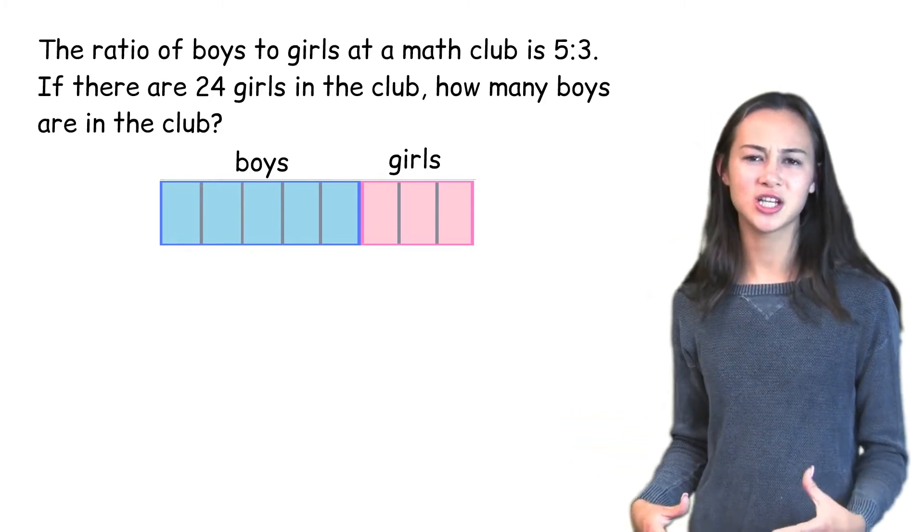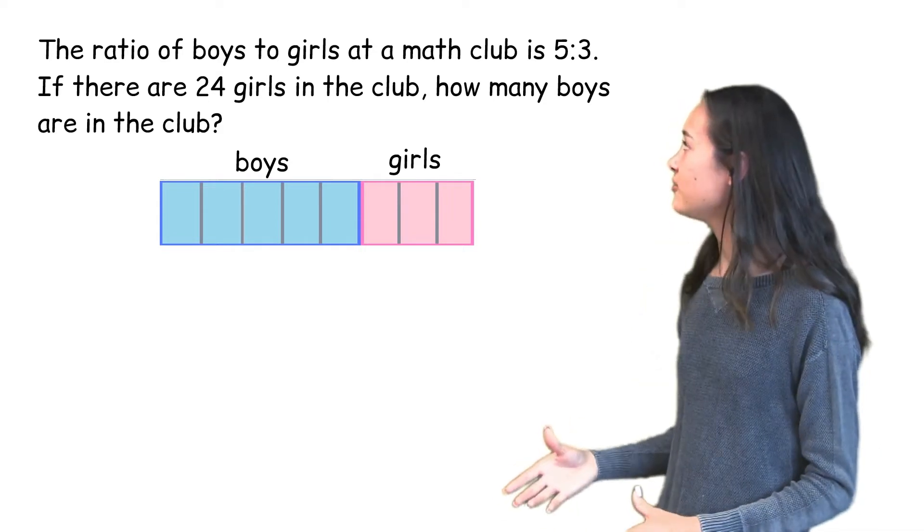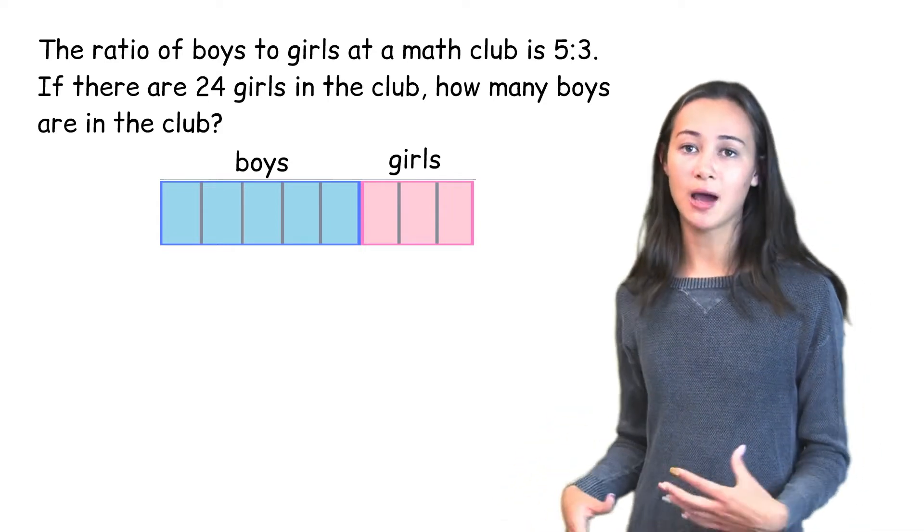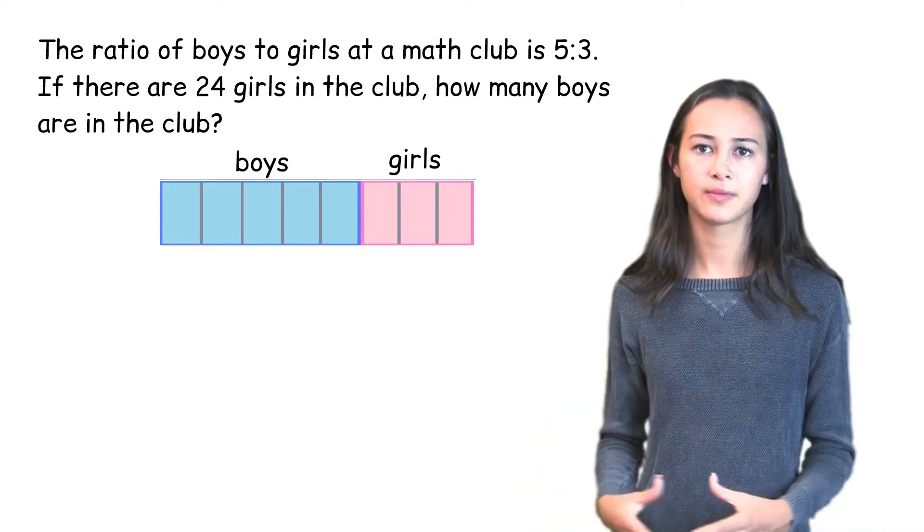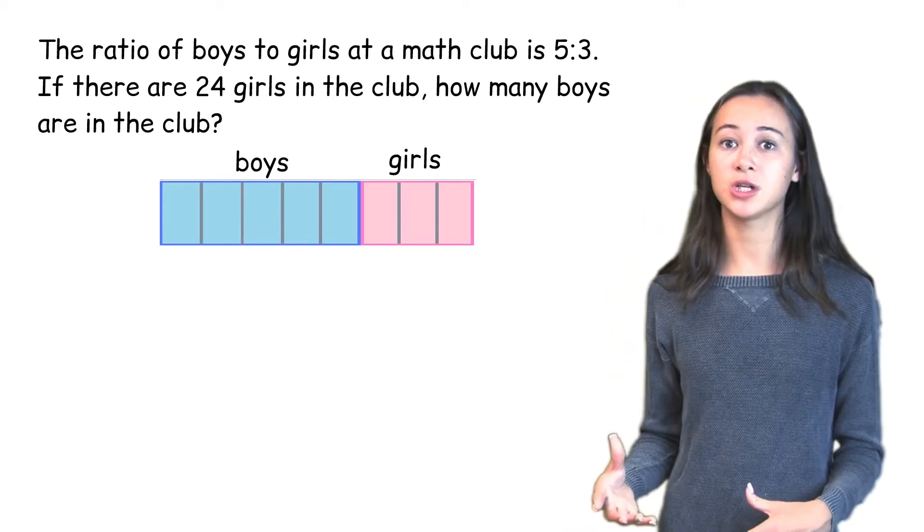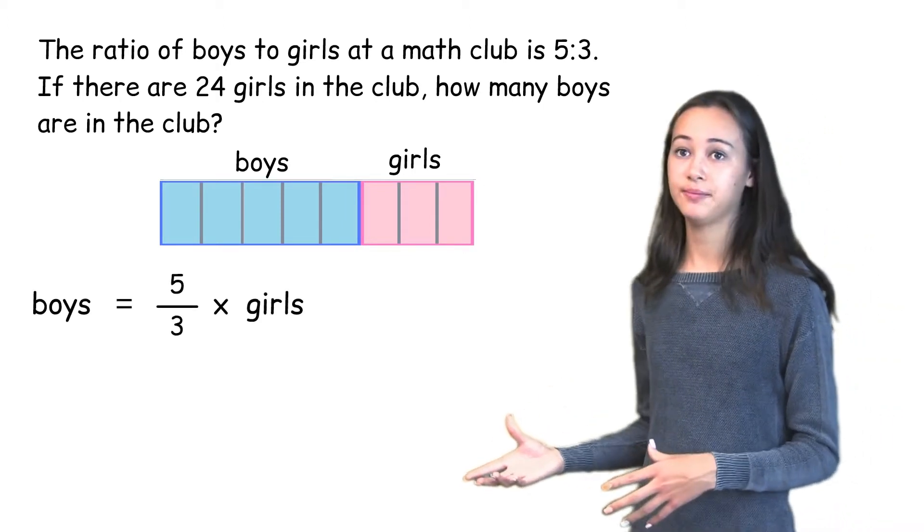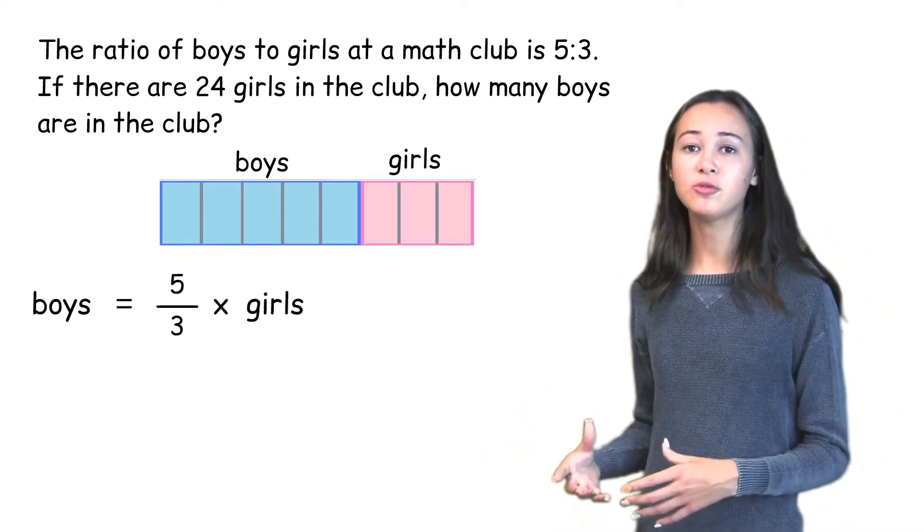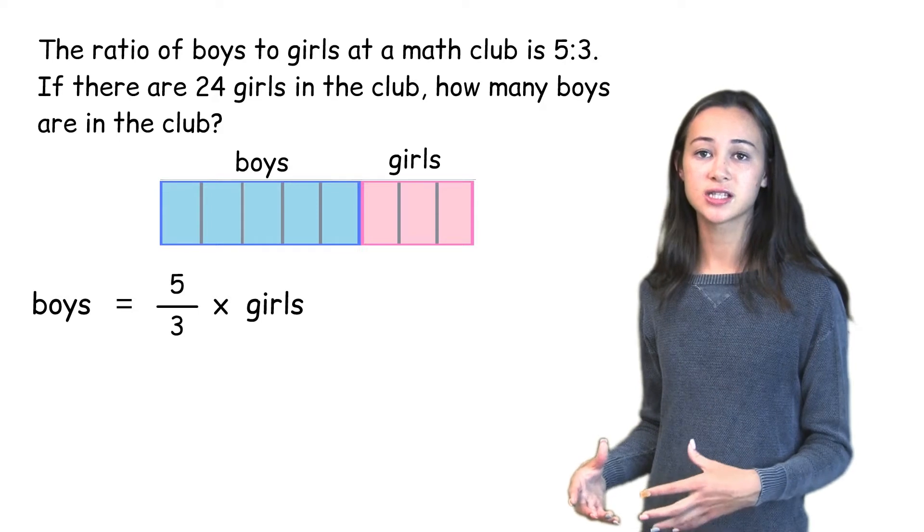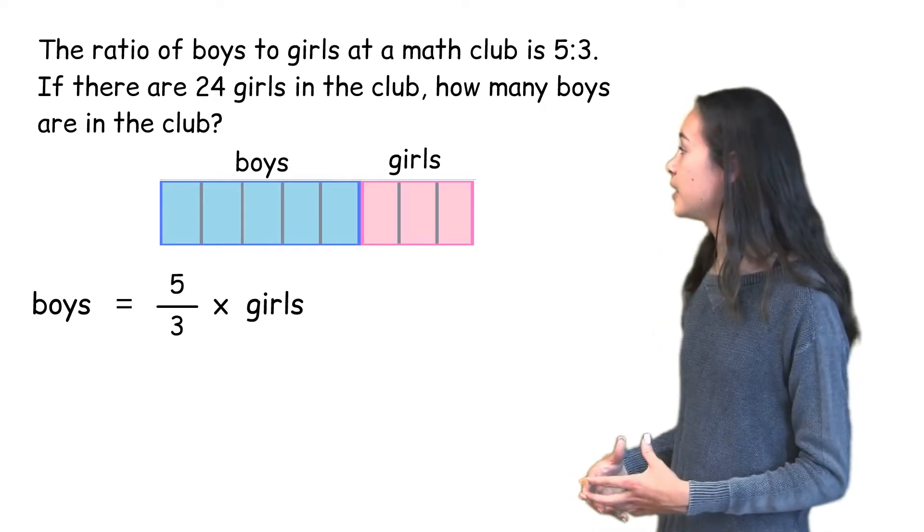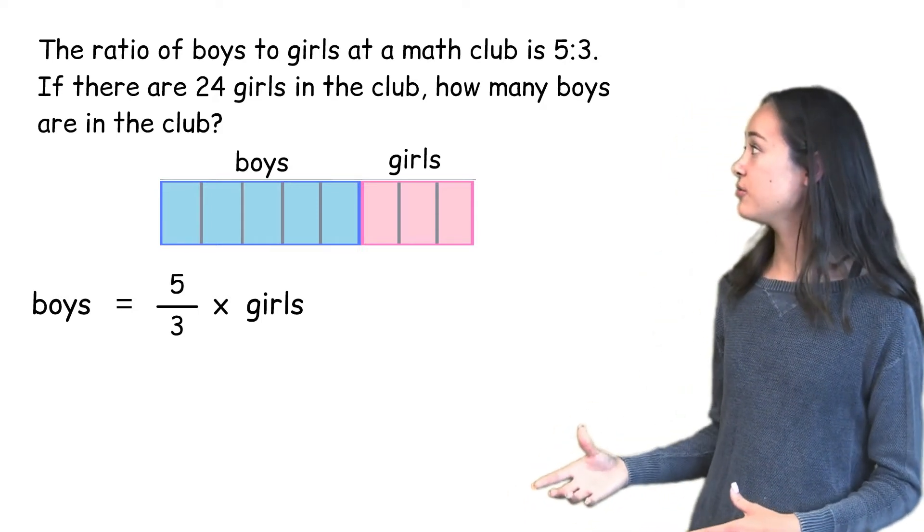Now since the question asks us, if there are 24 girls, how many boys will there be? So we can look for the relationship between girls and boys. By looking at the diagram, we can see that the number of boys is 5 thirds the number of girls.